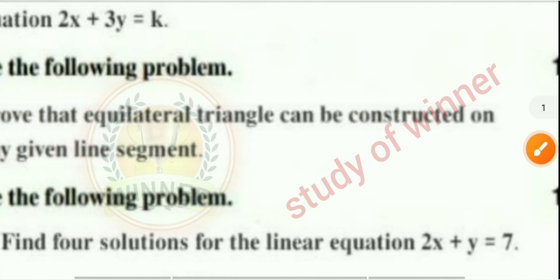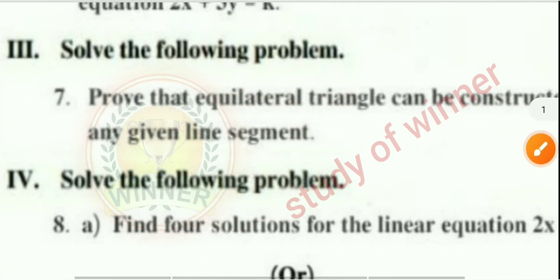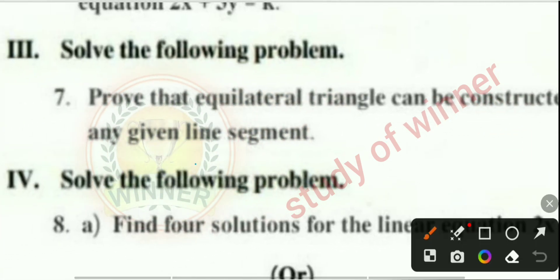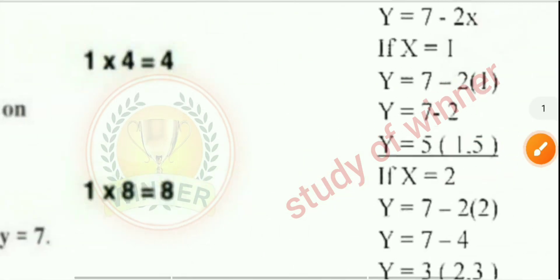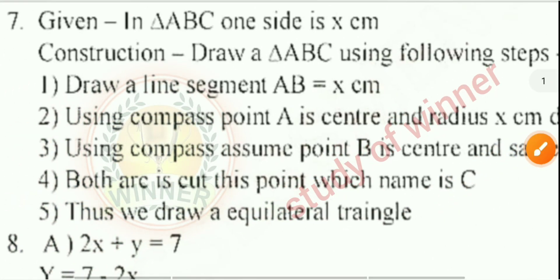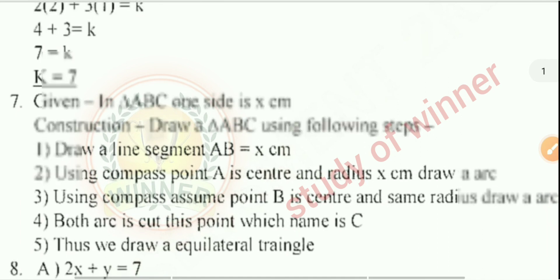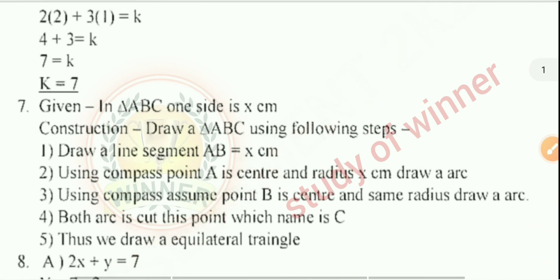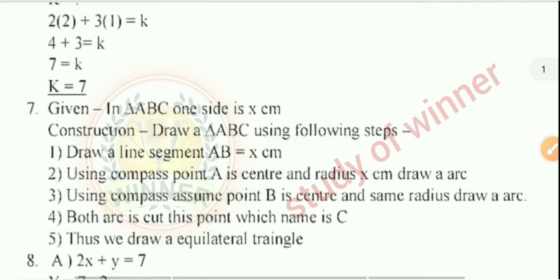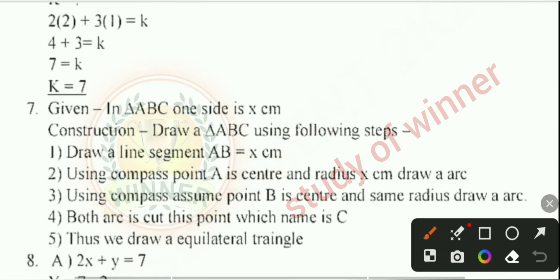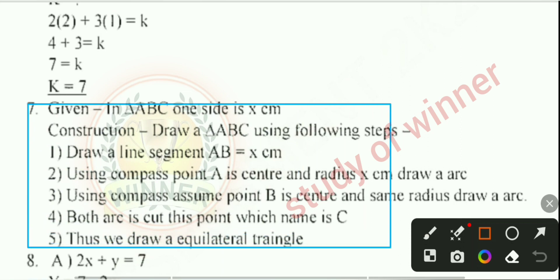Question 7: Prove that an equilateral triangle can be constructed on any given line segment. The complete solution with proof is provided in this video.